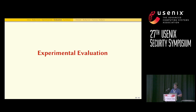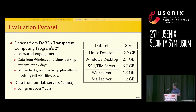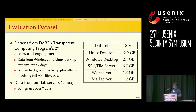For experimental evaluation, our system was evaluated on data from the DARPA transparent computing second adversarial engagement. We collected data from Windows and Linux desktops spanning seven days, containing benign activities such as web browser and email client use, as well as attacks involving the full APT lifecycle such as drop-and-execute, file exfiltration, and privilege escalation. We also collected lab data from a file server, web server, and mail server, also spanning seven days.